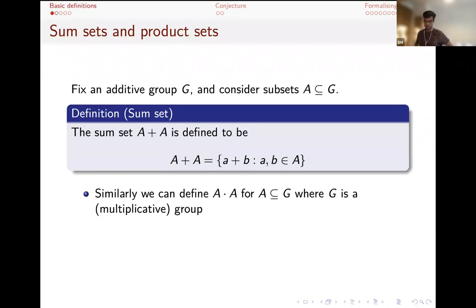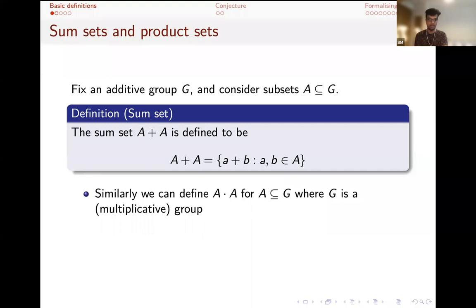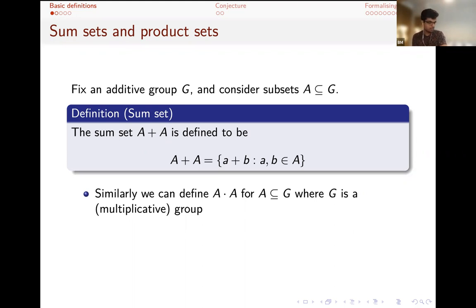Let me give you some idea of what sort of problems I'll be talking about. The main thing I need to discuss is the sum set. We're going to fix an additive group G. I'm going to switch a lot between additive and multiplicative groups throughout. For now, let's say I've got an additive group, and I'm going to consider finite subsets of it called A. The sum set is just all the things you can get by adding two elements from A.